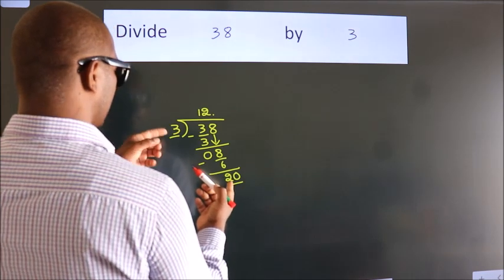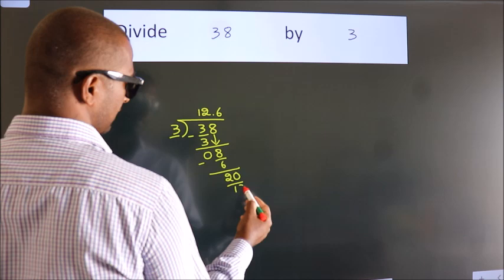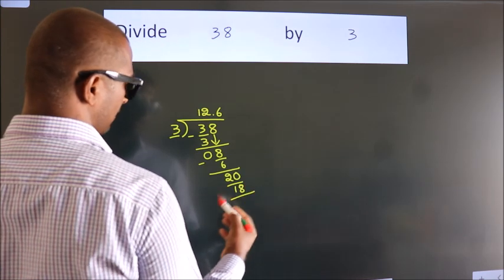A number close to 20 in 3 table is 3 6s, 18. Now we subtract.